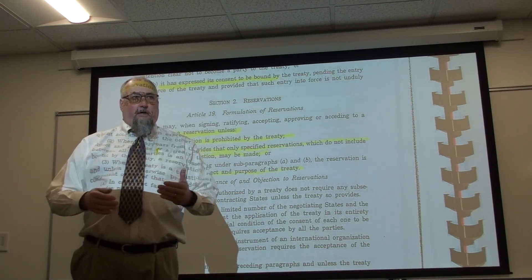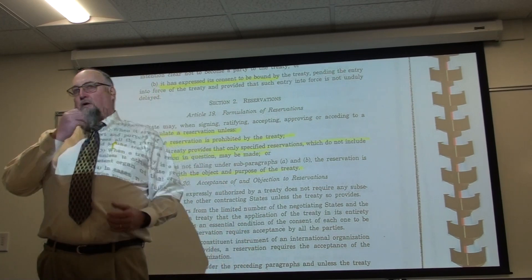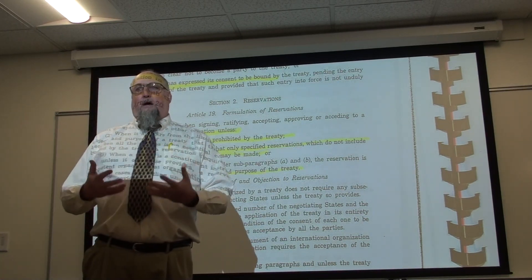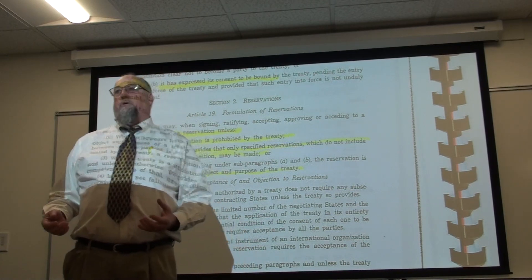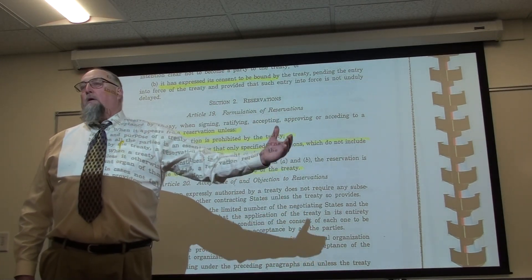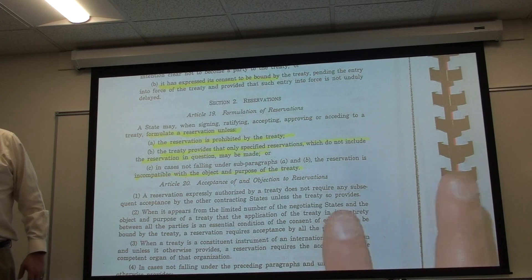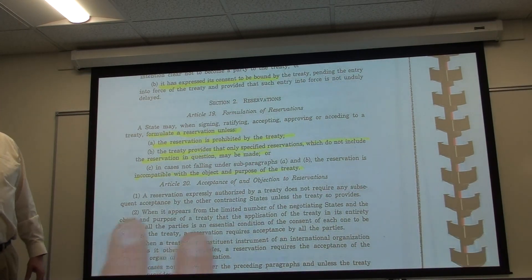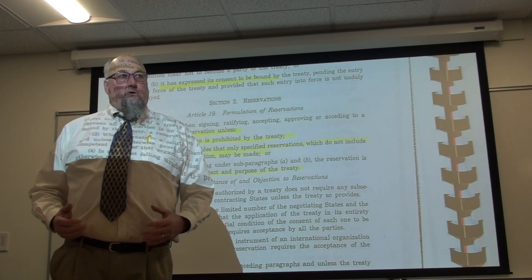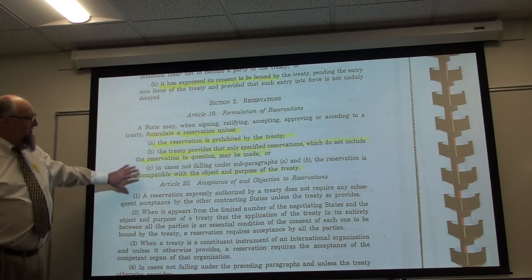If it's a bilateral treaty between only two countries, it's not a big deal — you just renegotiate or remove the language. The problem arises in a multilateral treaty with multiple parties, or when countries are acceding later and want to formulate reservations. This section details when a country may validly make a reservation and when a reservation is invalid.